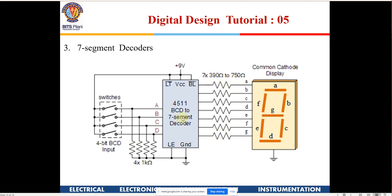What is the purpose of the four resistors on the input switches? These are all CMOS circuits. The switches here are like household switches — switch on gives 5V, switch off leaves the input hanging. Since the 4511 is a CMOS device, the MOSFET gate acts like a capacitor.